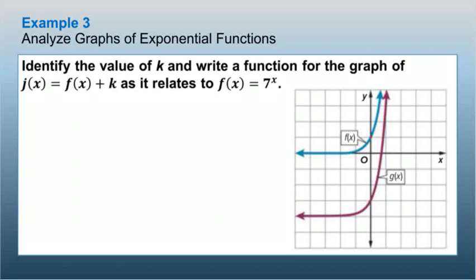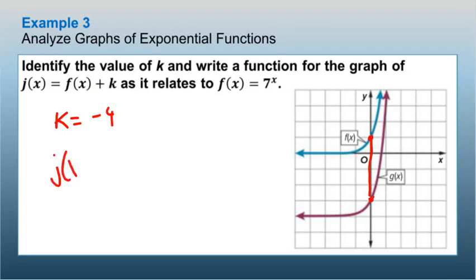For the next graph, the point went down 1, 2, 3, 4 — everything else stays the same — so k = −4. Therefore j(x) = 7^x − 4.